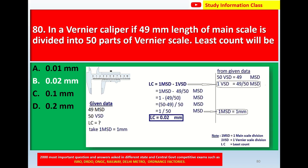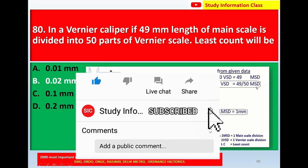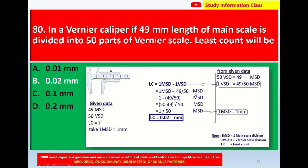We need to find the value of one VST. From the given data: 50 VST = 49 MST. So one VST = 49/50 MST. Substituting into the least count formula: LC = 1 MST − (49/50) MST.